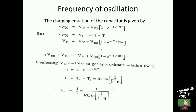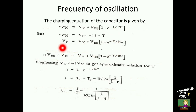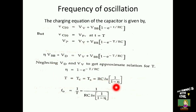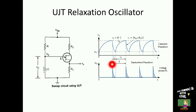Now we will find the frequency of oscillation. The charging equation of the capacitor is given by this expression. At time t equal to T, the capacitor voltage equals the peak voltage VP. When we substitute VP and replace t with T, we know that VP = η·VBB + VD. Neglecting the diode drop VD and the valley voltage, to get an approximate relation for T, this becomes η = 1 − e^(−T/RC). Taking the natural logarithm on both sides gives the total time period T = RC·ln(1/(1−η)). The frequency of oscillation is 1/T, where T is T_on plus T_off.